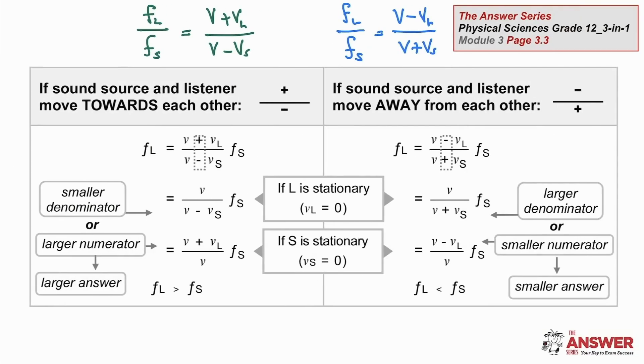When the source and the listener are moving towards each other, the ratio frequency listener over frequency source is going to be greater than one. If we add the velocity of the listener and or subtract the velocity of the source, then this fraction is also greater than one. We get the opposite effect when the objects are moving away from each other. Now both of those ratios are going to be less than one.